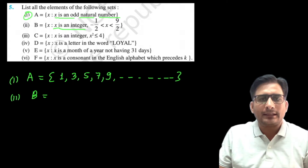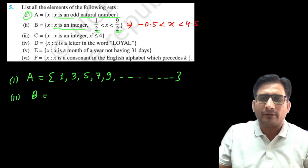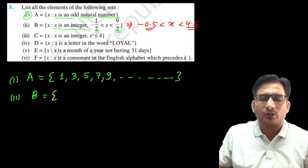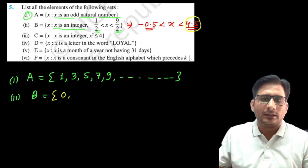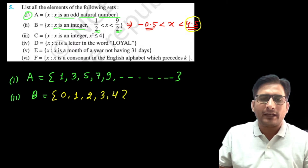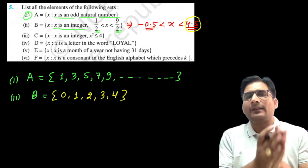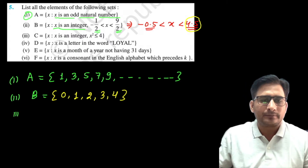Part two: x is an integer lying between −1/2 and 9/2. Now −1/2 = −0.5 and 9/2 = 4.5. We need integers greater than −0.5, so we start at 0. Then: 0, 1, 2, 3, 4 — and 4 < 4.5, so 4 is included. 5 is not included because 5 > 4.5. So the roster form is {0, 1, 2, 3, 4}.